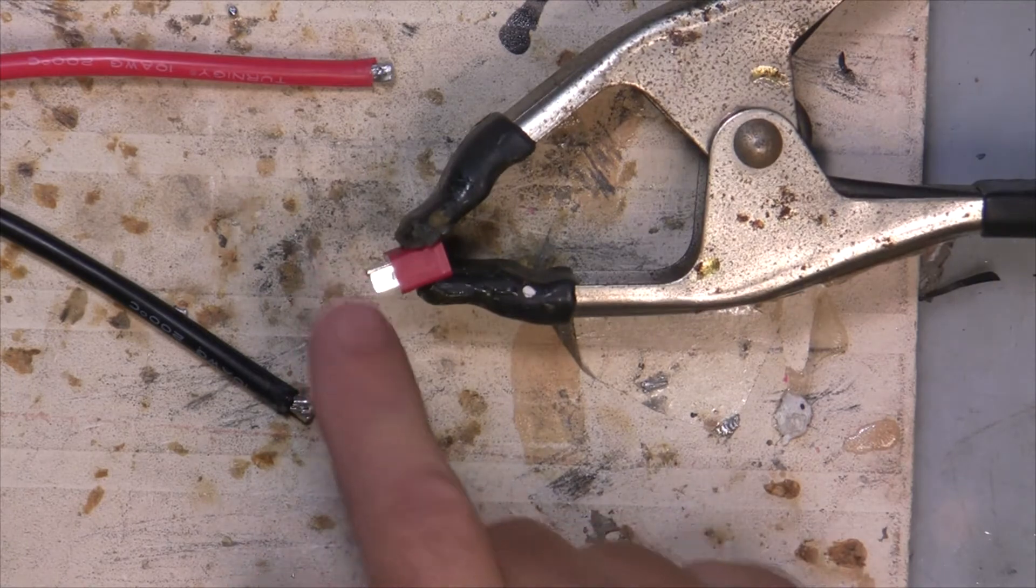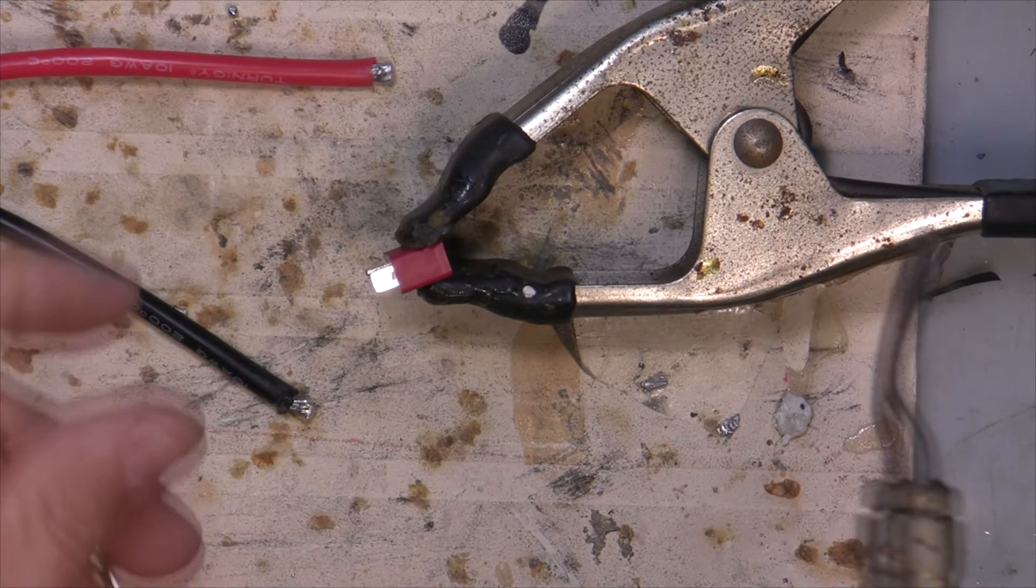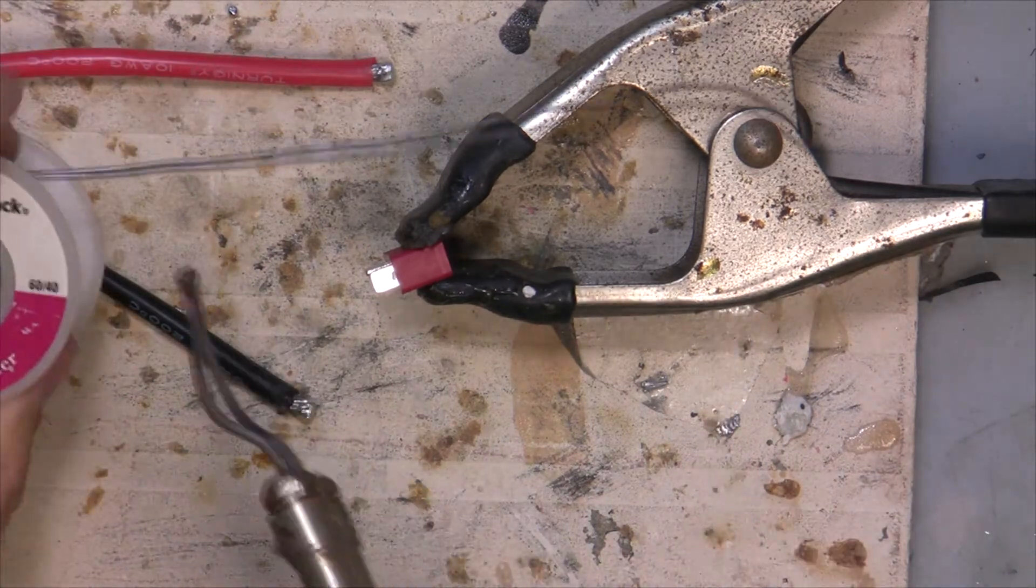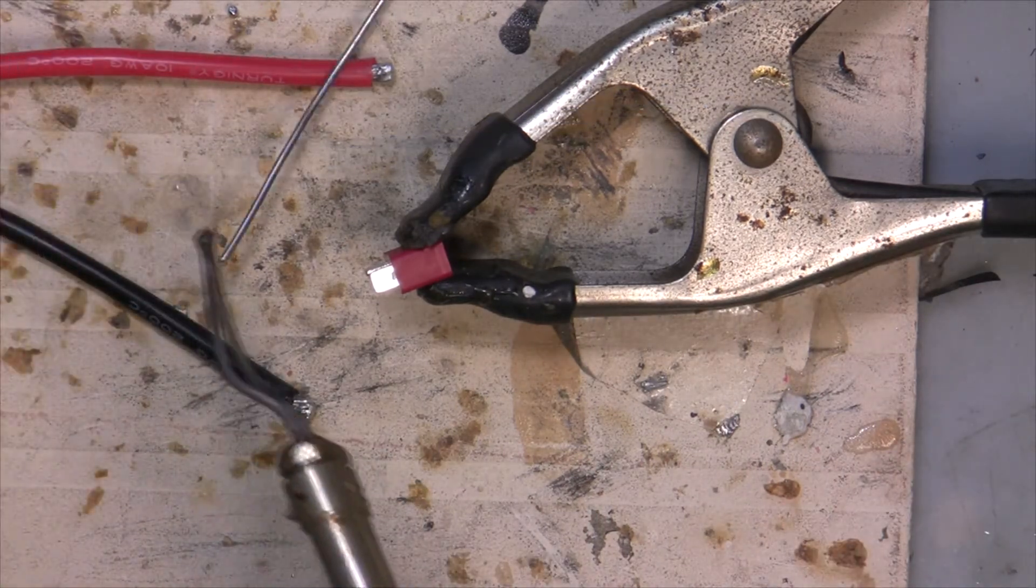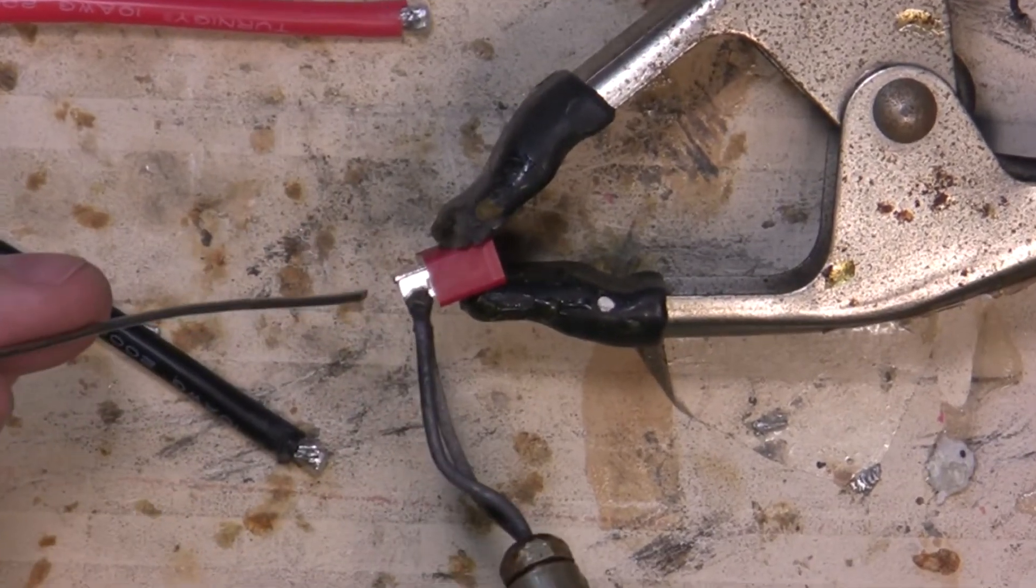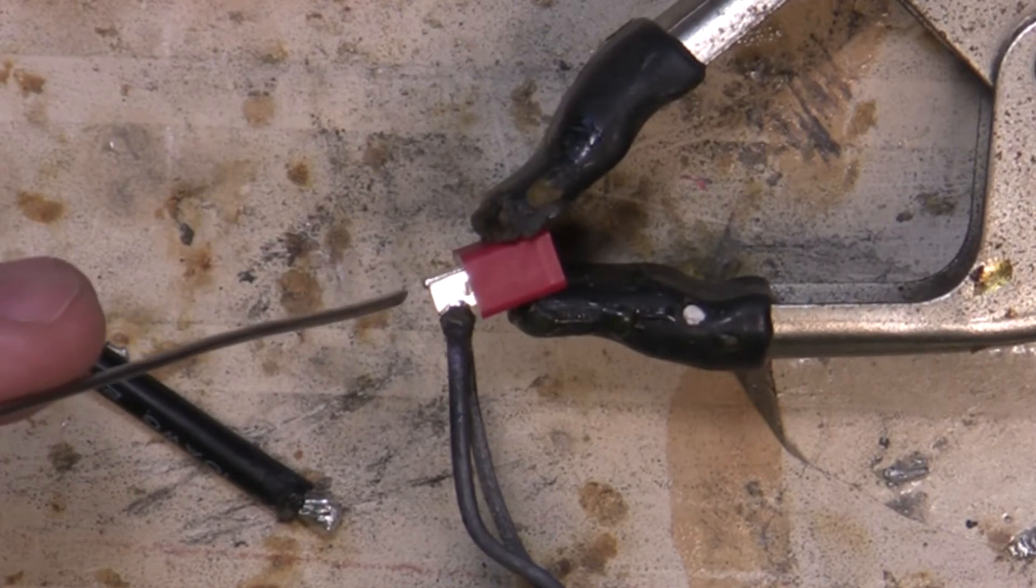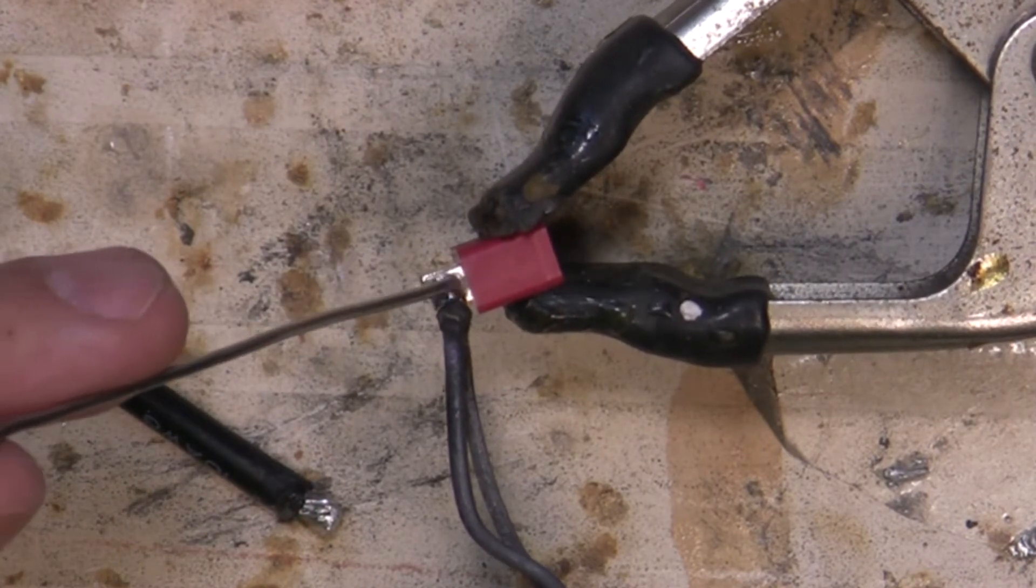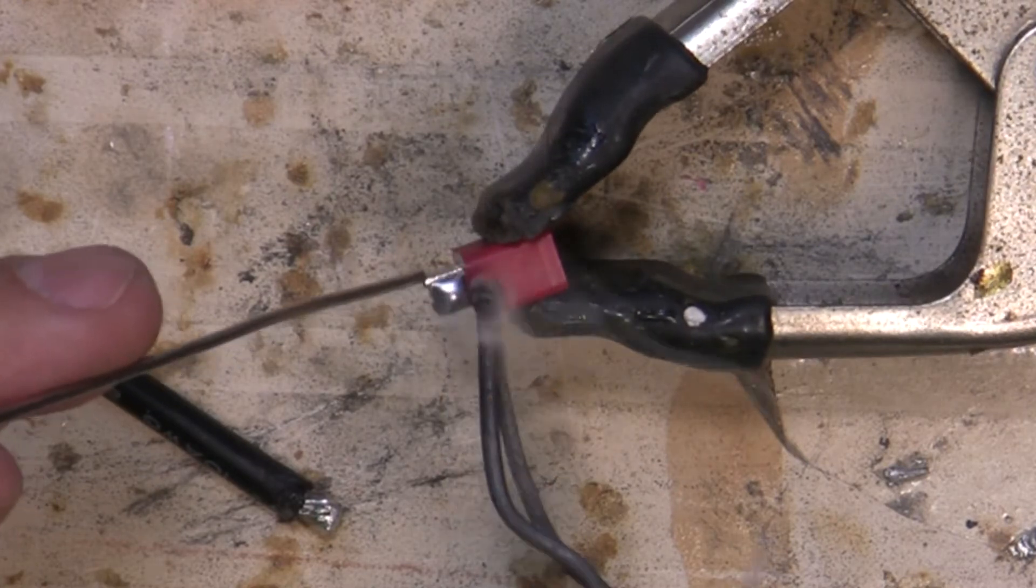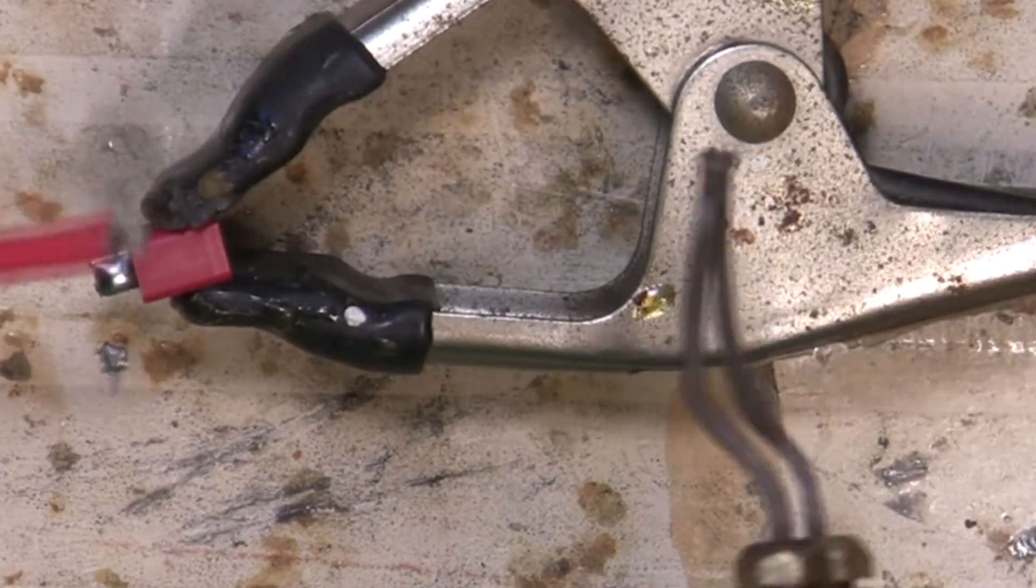And we're going to put the positive on first. So we're going to heat that connector, get a little section of solder here. Just clip that off. And we're just going to tin the positive side here first. Get that nice and tinned with a nice little bead of solder on top.